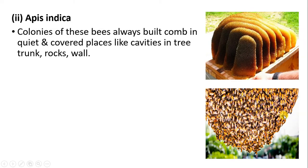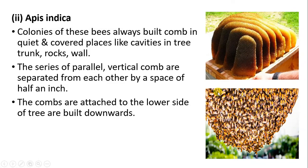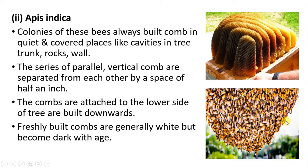Apis indica prefers to build the comb in dark places like cavities of tree trunks, rocks, and walls. When we observe the comb, there are parallel combs constructed — all vertical — and each comb is separated from each other by about half an inch. The combs are attached to the underside of tree branches and built downward. Freshly prepared combs are always white in color, but they become darker and dirtier with age.